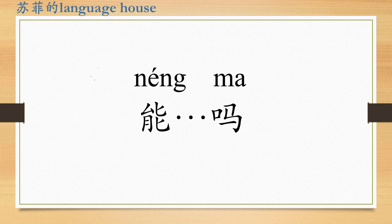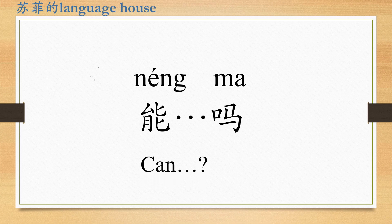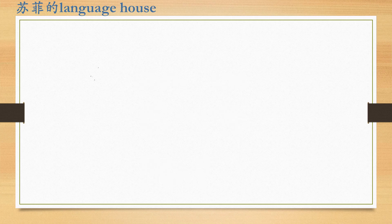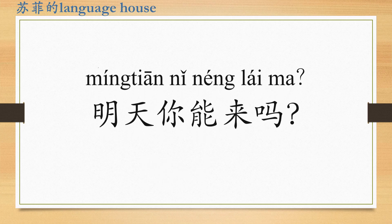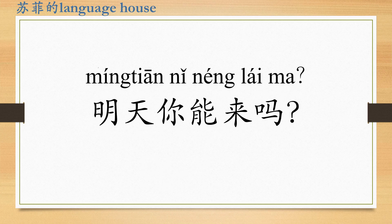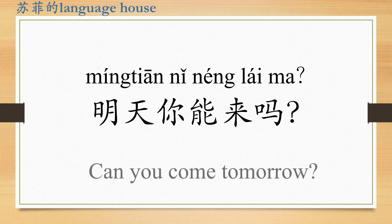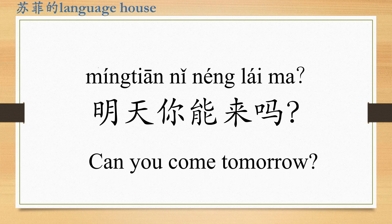Neng is often used to make a request. For example: 明天你能来吗 (Míng tiān nǐ néng lái ma)? 明天 means tomorrow, 能 means can, 来 means come. 明天你能来吗? — Can you come tomorrow?